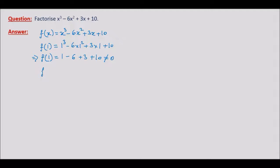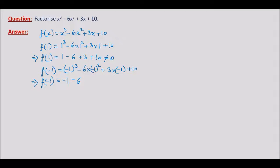So let us take x equal to minus 1. What is f of minus 1? It is minus 1 whole cubed minus 6 times minus 1 whole squared plus 3 times minus 1 plus 10. This gives us minus 1, minus 1 squared is plus 1 multiplied with minus 6 gives minus 6, 3 times minus 1 is minus 3, and plus 10. These three negative terms add to negative 10, and positive 10 nullifies them to give us 0. So f of minus 1 is equal to 0.